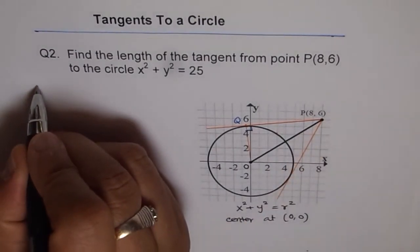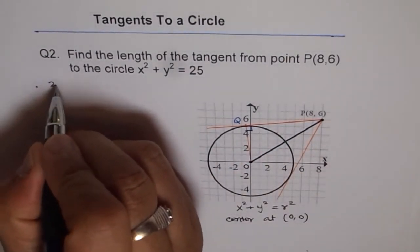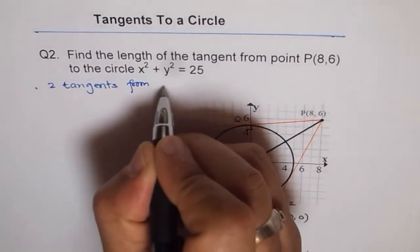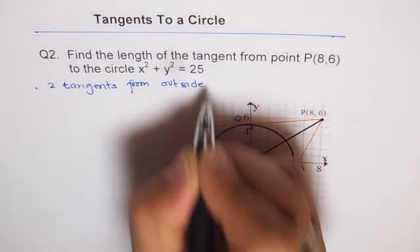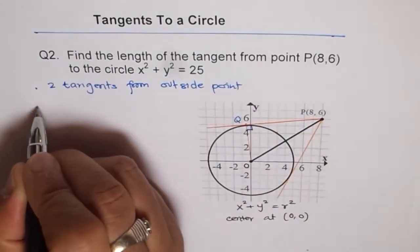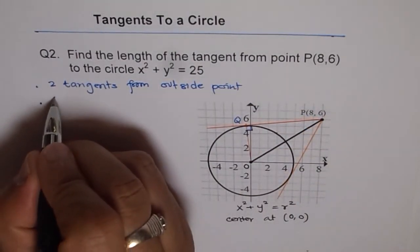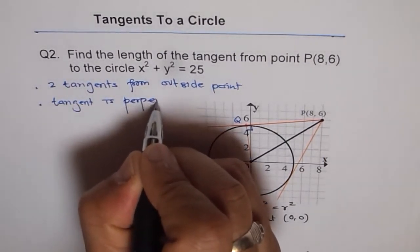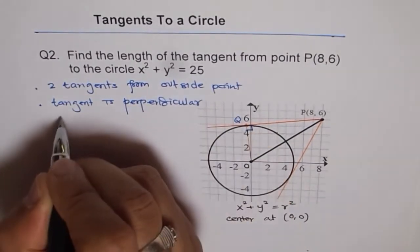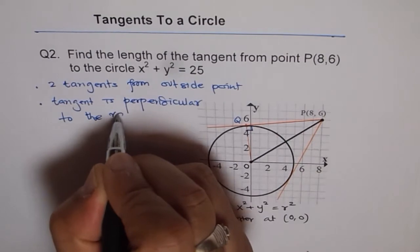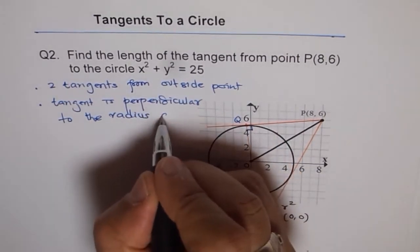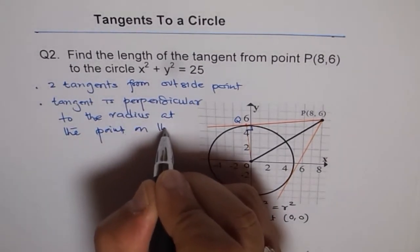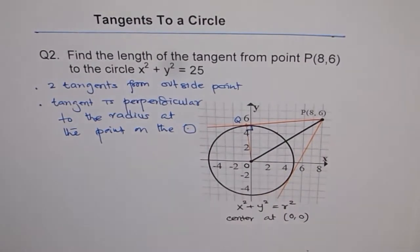So always, it is important to note that the radius will be at right angles to the tangent. So two things which we should consider: One, that we could draw two tangents from an outside point. And second, that the tangent is perpendicular to the radius at the point on the circle.